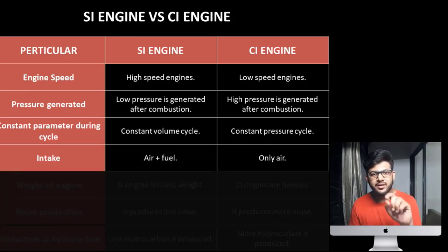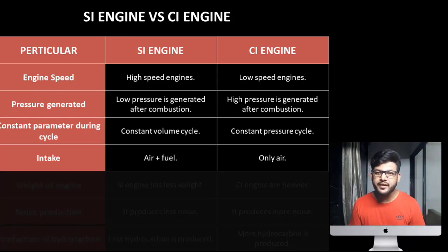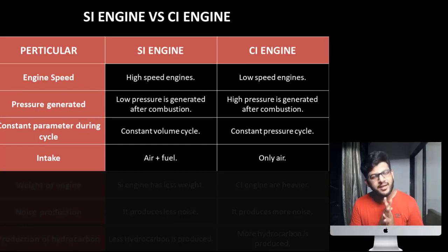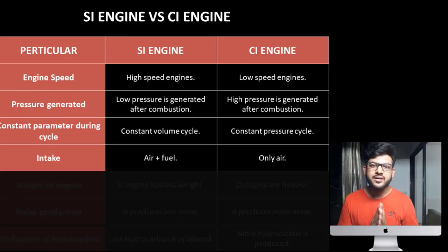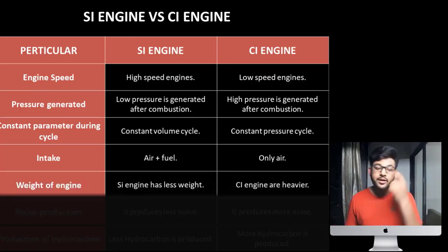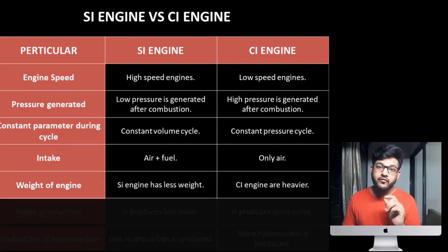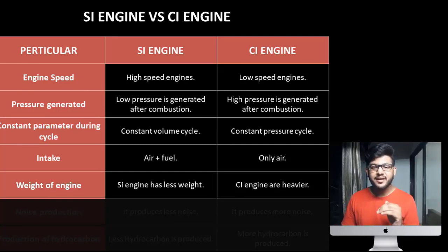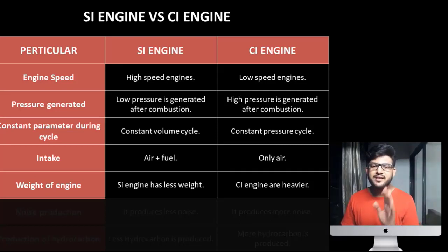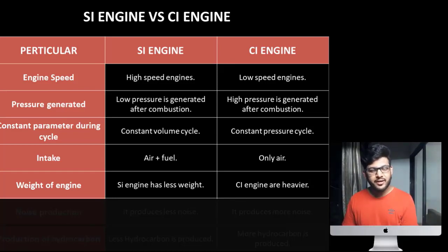Next is intake — in the inlet or suction stroke, what is going inside the cylinder. In SI engine, the intake is air plus fuel. In diesel engine, we take only air as intake. We are talking about the inlet stroke only. Next point is weight of the engine. SI engine is a low capacity engine and needs fewer parts compared to diesel engine, so SI engine will have less weight. CI engine will be heavier than SI engine for the same capacity.